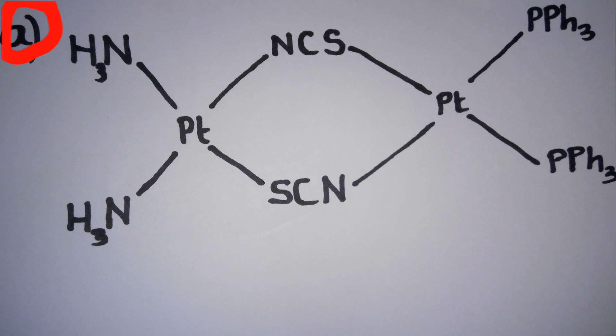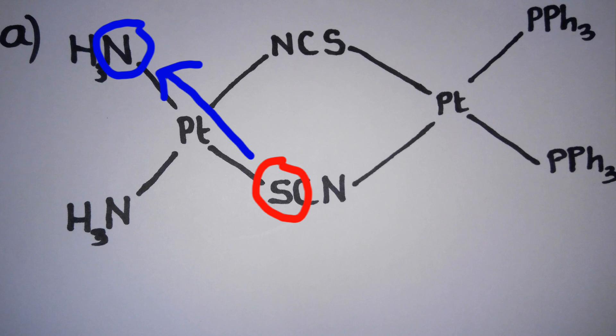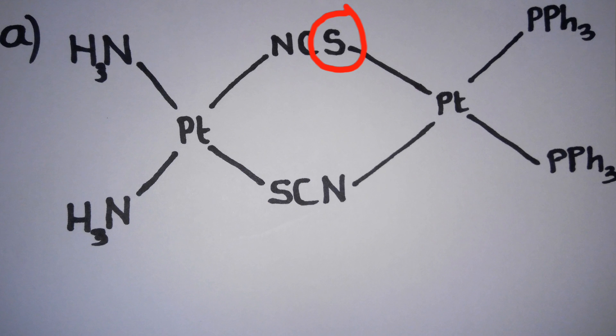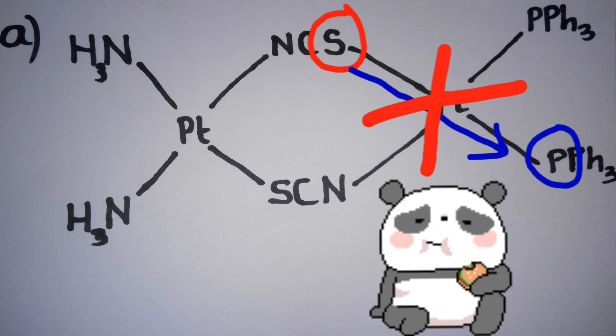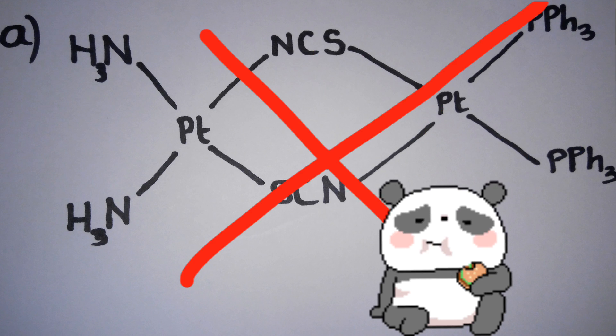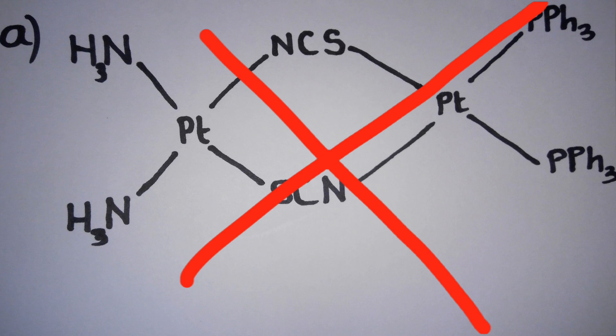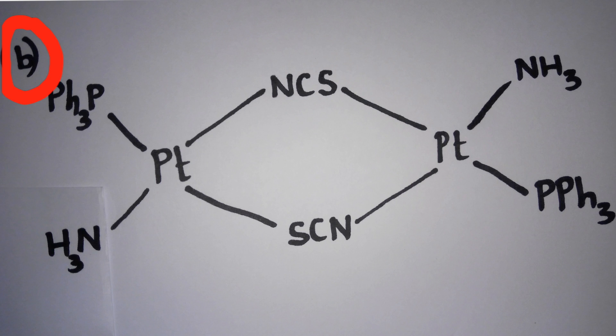Let us analyze each option individually. In option A, this sulfur is trans to this nitrogen, which is okay and which will be stable. But this sulfur is trans to this phosphorus. As I have said earlier, it is unstable, and option A becomes the wrong choice.